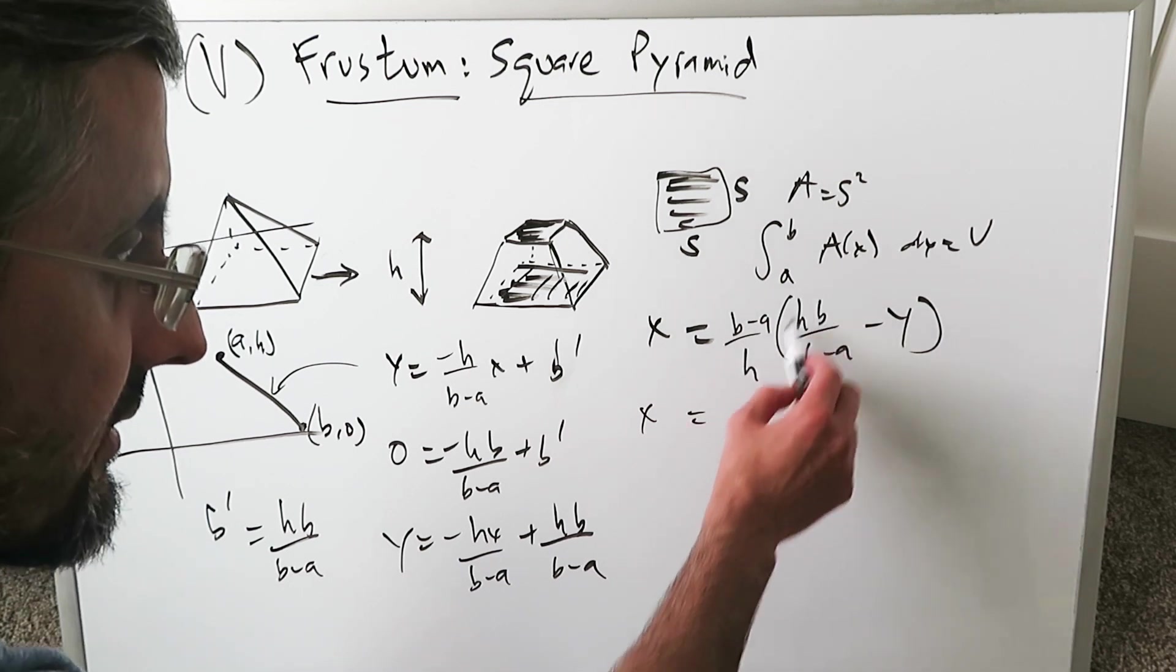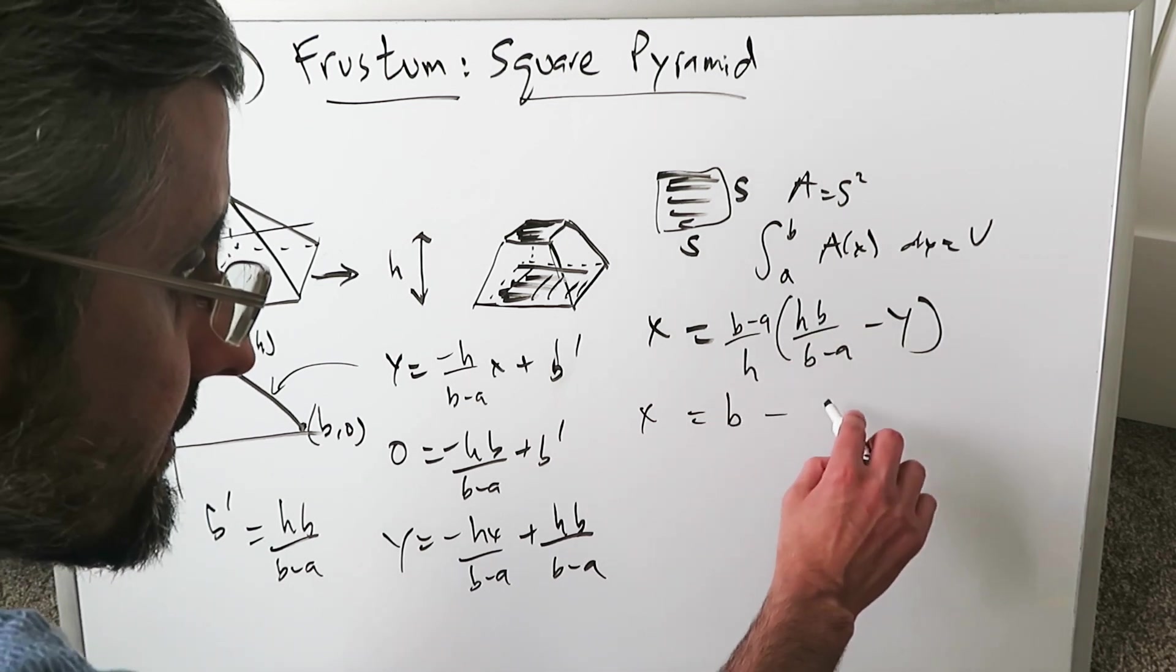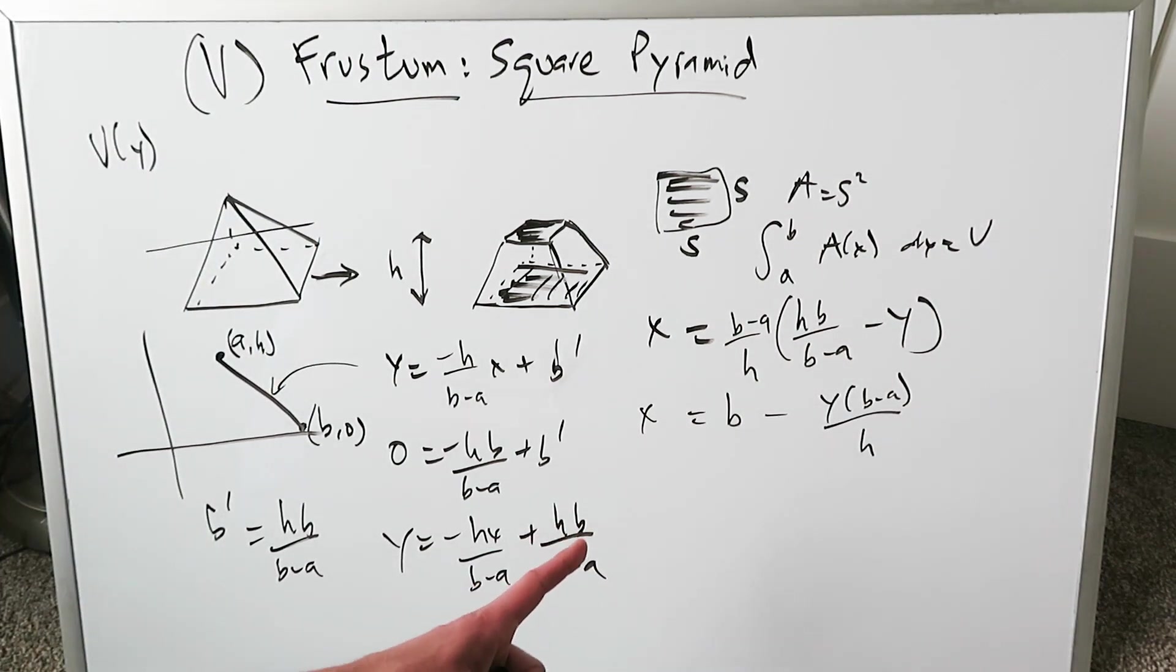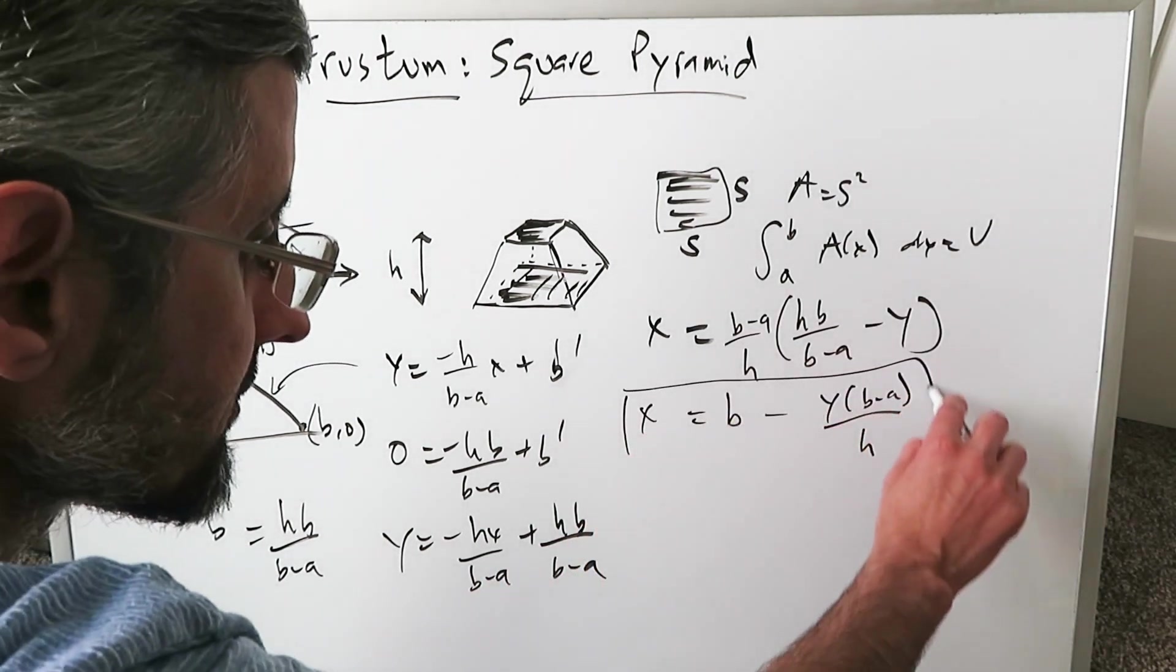X equals, this cancels out, that cancels out. You have B minus Y times B minus A over H. Up till now, it looks very much like the cone volume frustum procedure. But from this point onwards, this will change.